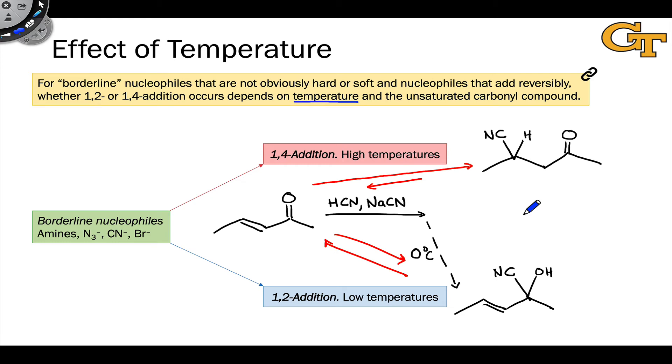The reason conjugate addition predominates at high temperatures is because the conjugate addition product is more stable than the direct addition product. Because in the conjugate addition product, we retain the stronger carbon-oxygen double bond. And this is going to be a general result for any nucleophile that adds reversibly.